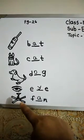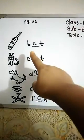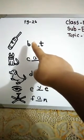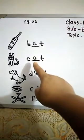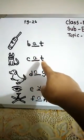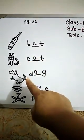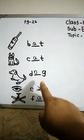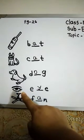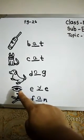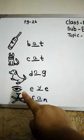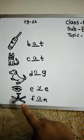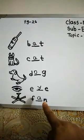Let's start. B dash T, bat. Then cat. Then dog. Then everyone know this, eye. E Y E, eye. This is fan. F A N, fan.